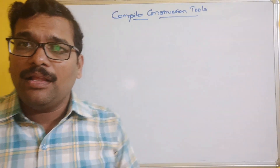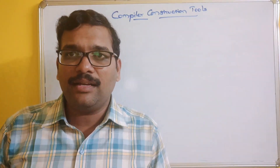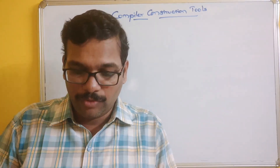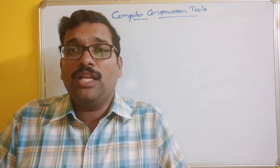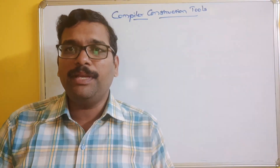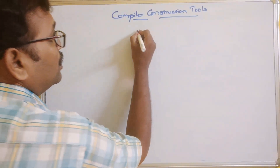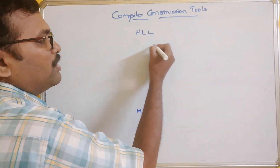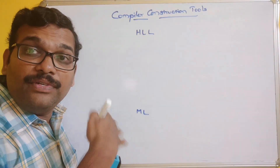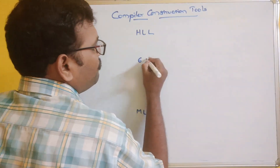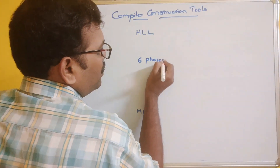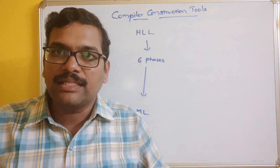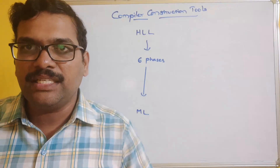We know that a compiler is a translator which will translate from one language to another language, as we have seen in the introduction part. Usually the high level language will be converted into machine level language. This involves different phases — around six phases — and the program moves through all six phases until finally we get the machine code.